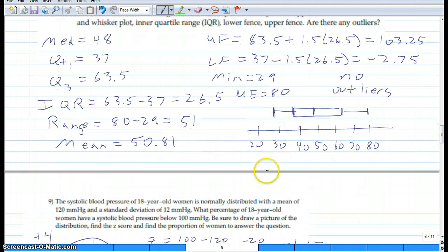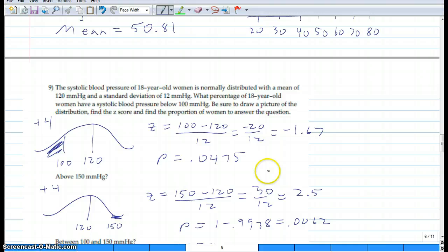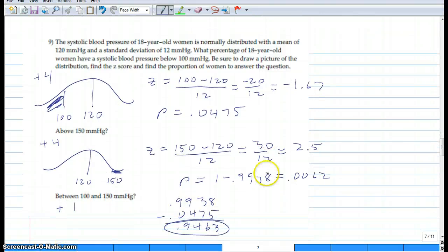Number nine, just draw the normal distribution, put 120 in the middle. What's the probability somebody has a blood pressure under 100? So we found the Z score: 100 minus 120 over 12, got negative 1.67. Looked it up in the Z table and there's 0.0475. That's pretty much it.